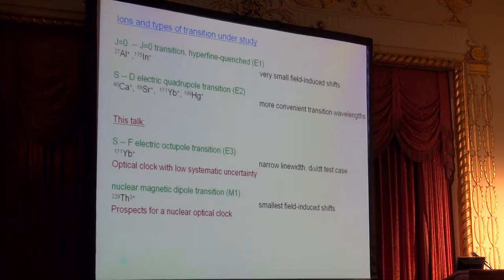I will speak today about two different types of transitions: first, about a higher-order multipole transition, an electric octupole transition S-to-F, also in the ytterbium plus ion, offering very narrow linewidths and high sensitivity to variations of fundamental constants. I will show that it is possible with this system to develop an optical clock with very low systematic uncertainty. Towards the end of my talk, I will also explain the prospects for an optical nuclear clock based on a nuclear transition in thorium-229, which finally may offer the smallest field-induced shifts.